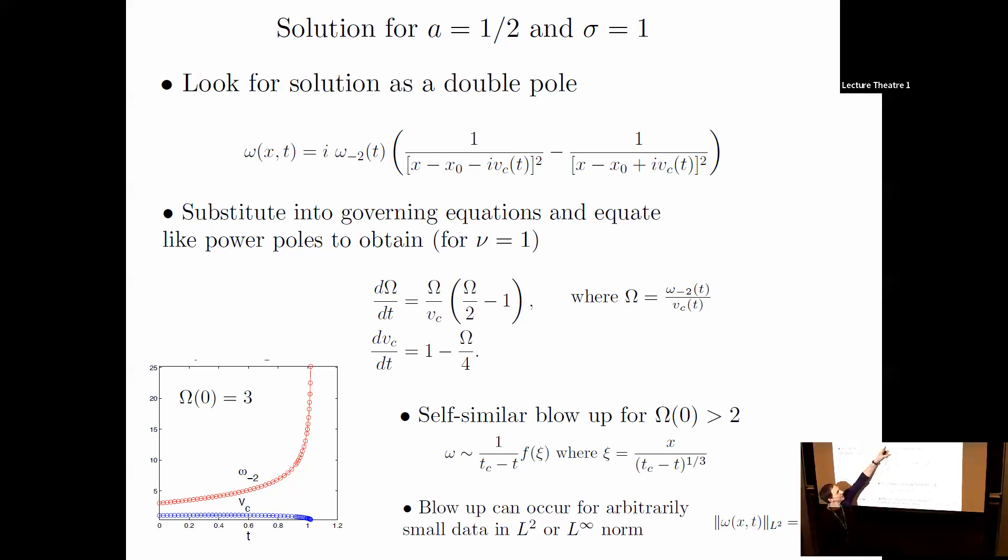The forms look simple, but these are long calculations because you have something smooth multiplying the singularities. When a is one-half and sigma equals one, you look for solutions in terms of movable poles and time-dependent amplitudes. We can find them. You plug them into the equations, equate like powers of poles, and get a system of ODEs.